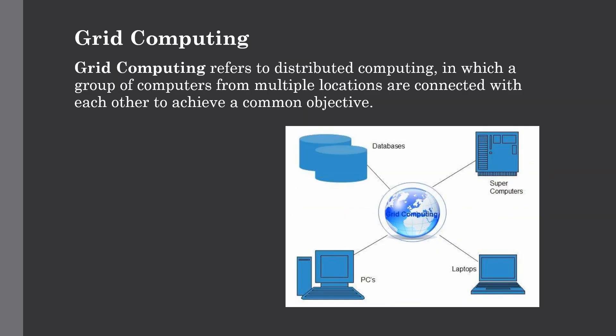The next technology is grid computing. Grid computing refers to distributed computing, in which a group of computers from multiple locations are connected with each other to achieve a common objective. These computer resources are heterogeneous and geographically dispersed. As shown in this figure, multiple computers are connected using grid computing and can work together to achieve a similar task. This breaks complex tasks into smaller pieces which are distributed to CPUs that reside within the grid.